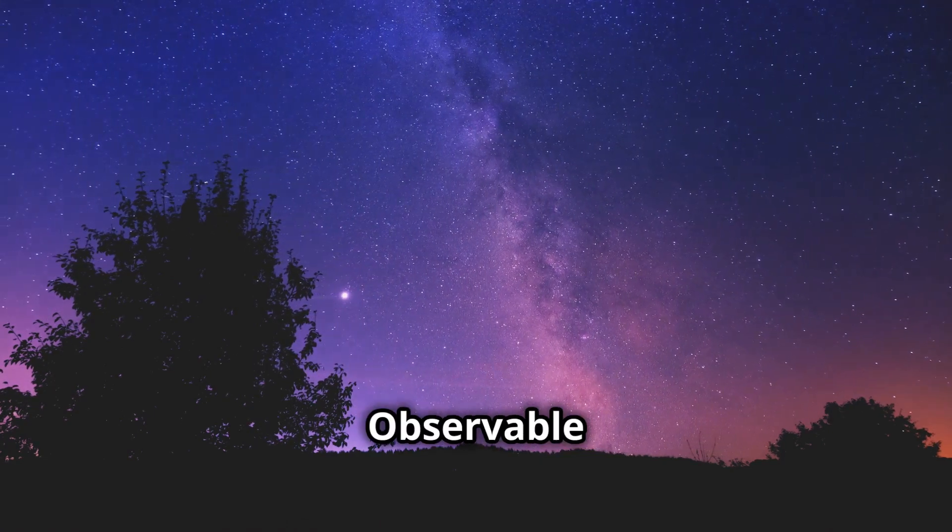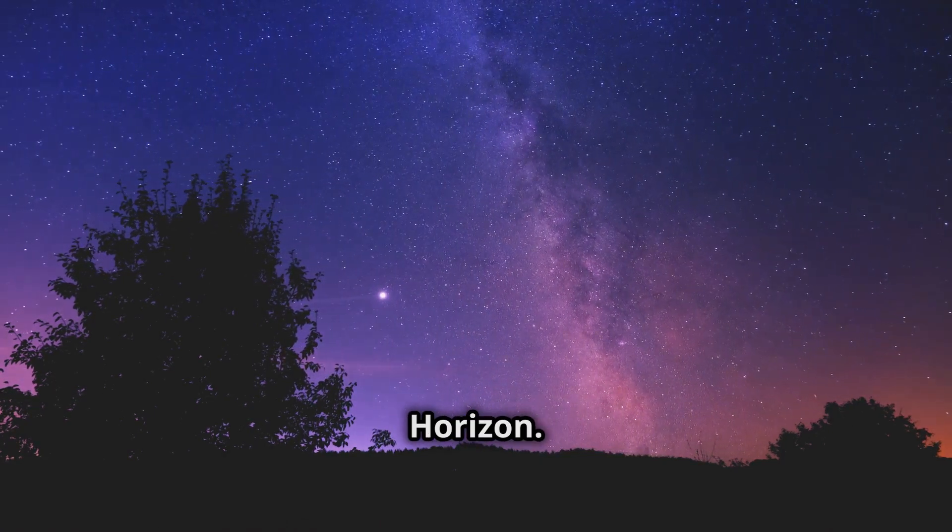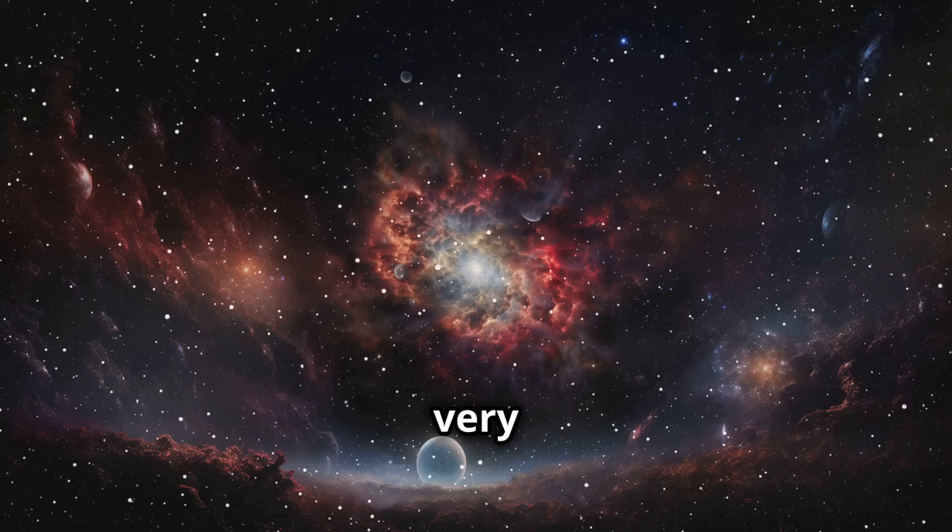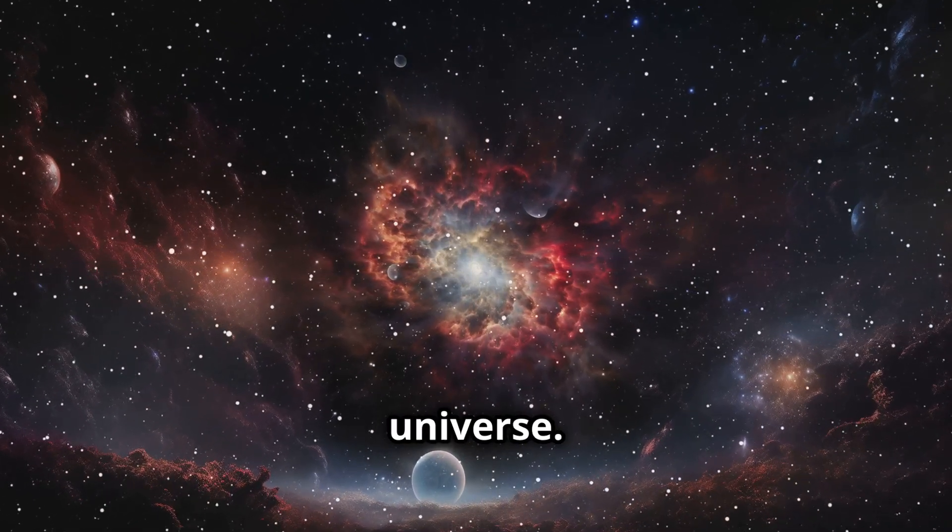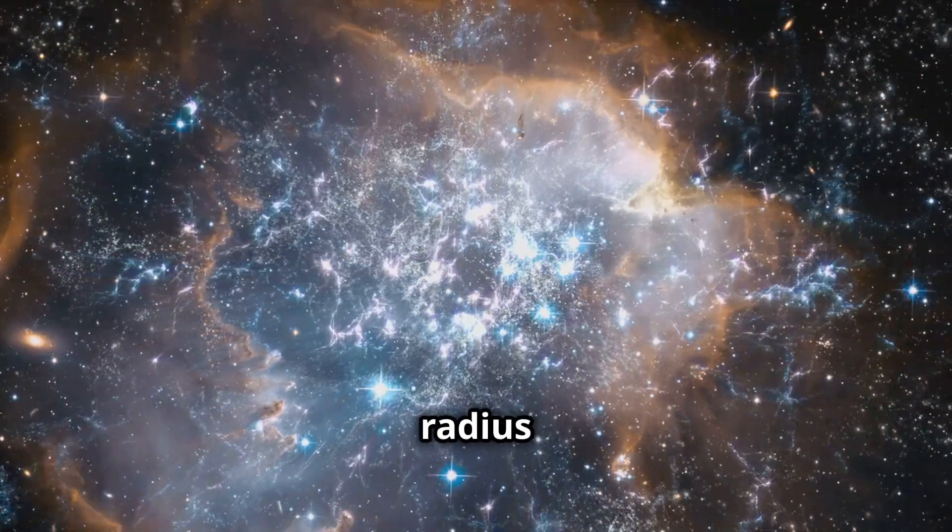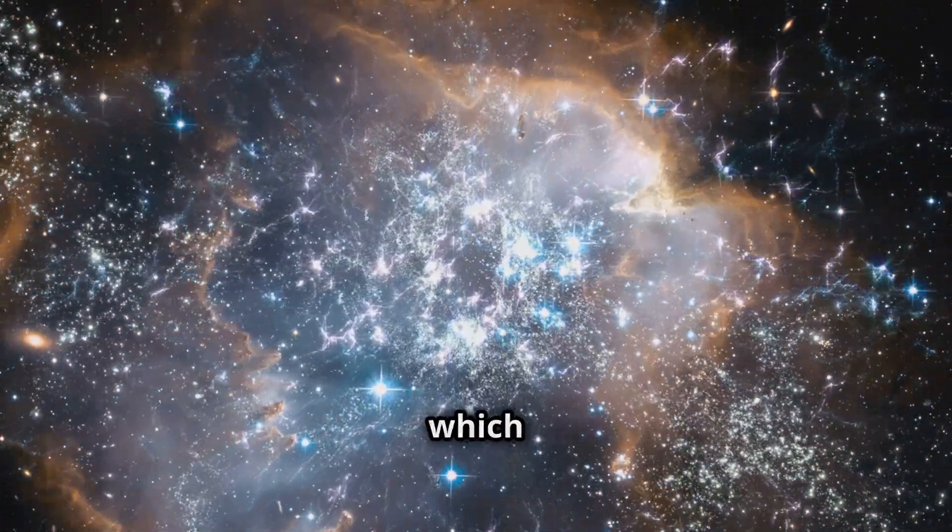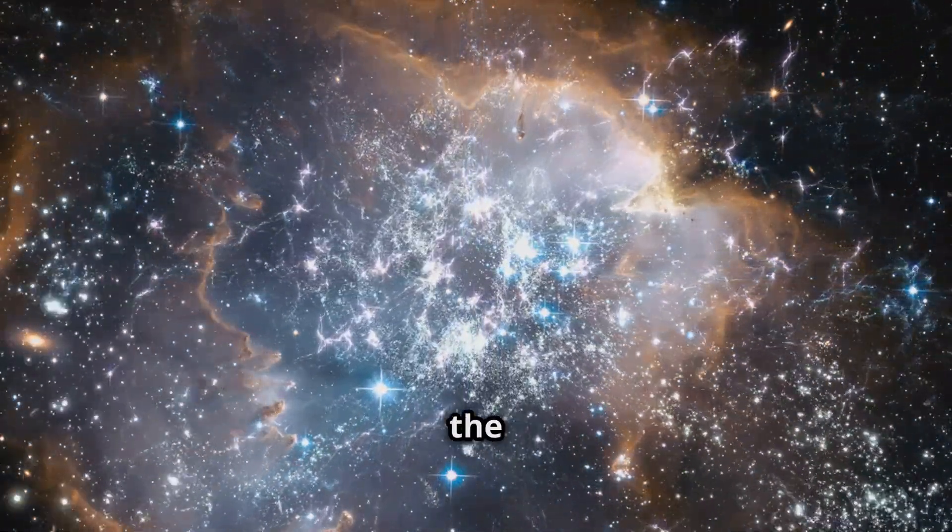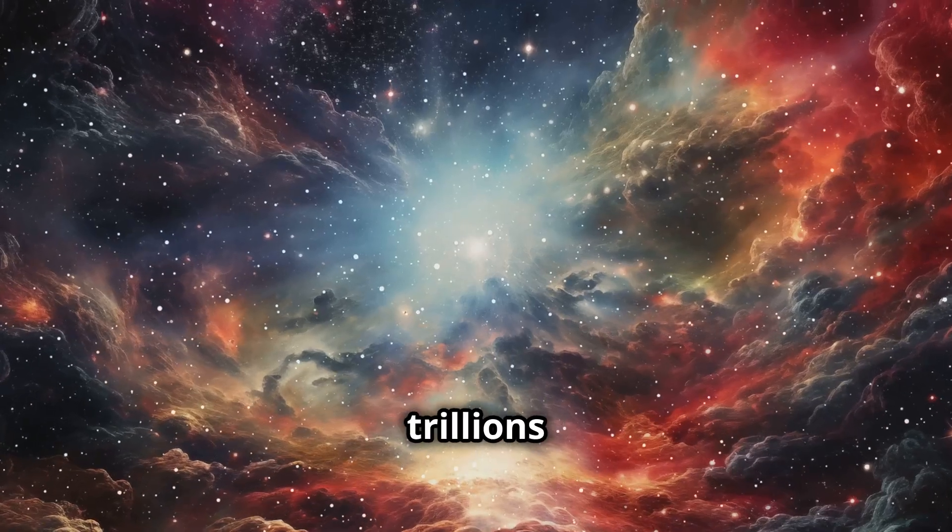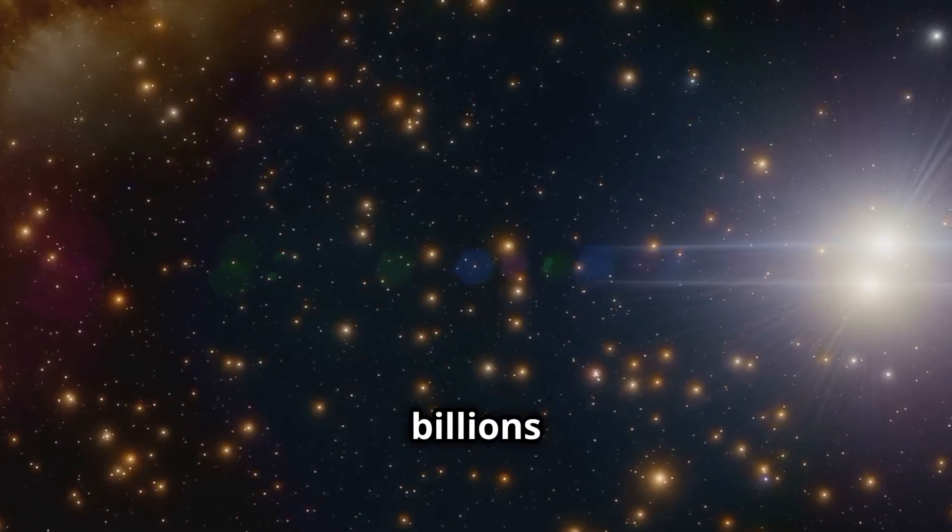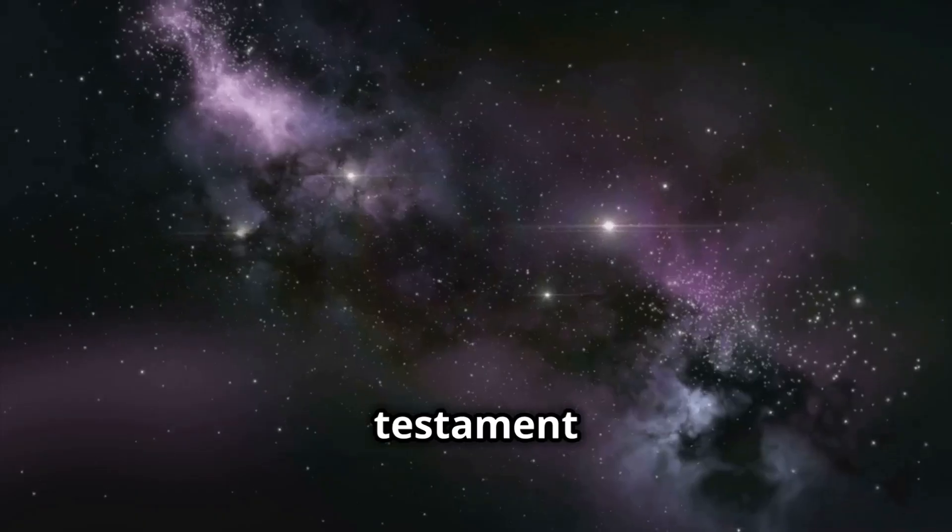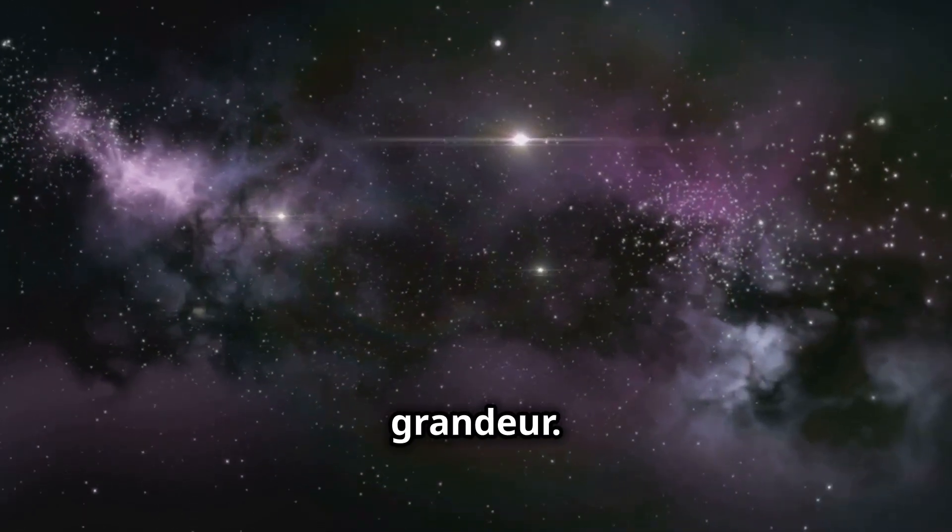Chapter 8: The Observable Universe, a cosmic horizon. Now we reach the very limit of our cosmic vision, the observable universe. This sphere with a radius of 93 billion light-years represents the region of space from which light has had time to reach us since the Big Bang. It contains trillions of galaxies, each home to billions or even trillions of stars, a testament to the universe's awe-inspiring scale and grandeur.